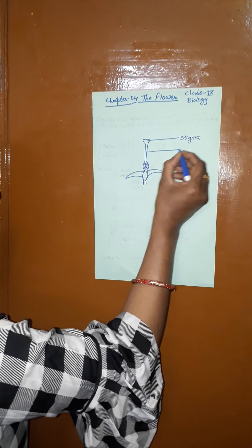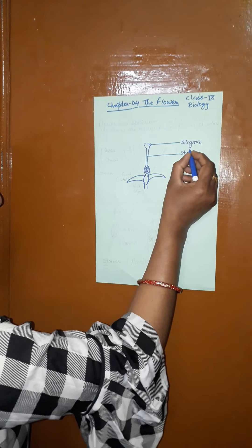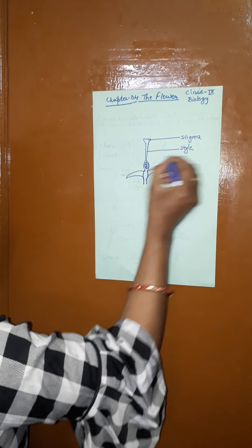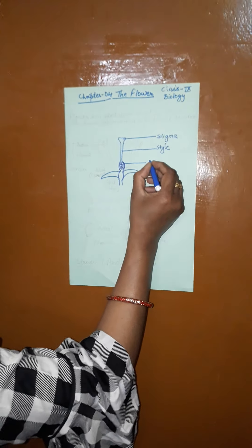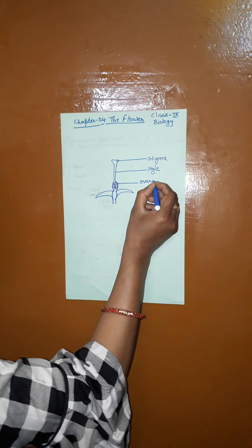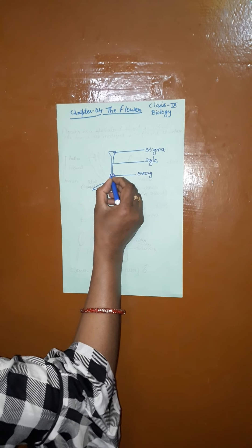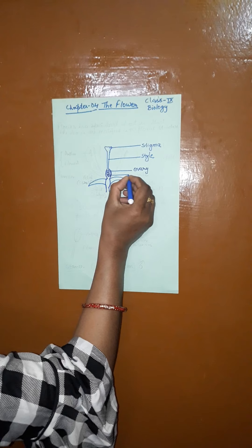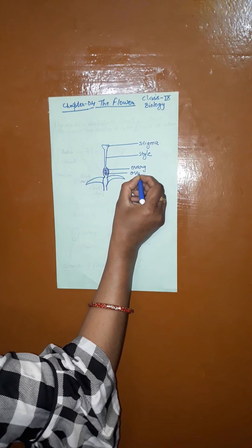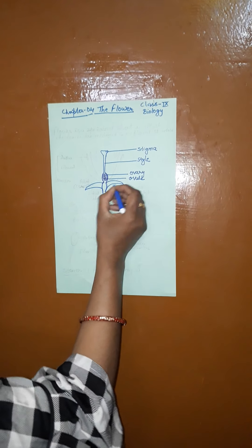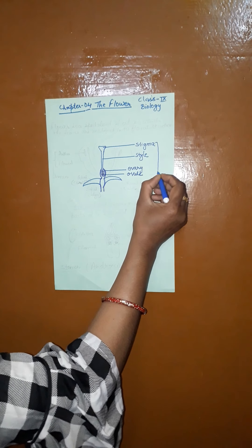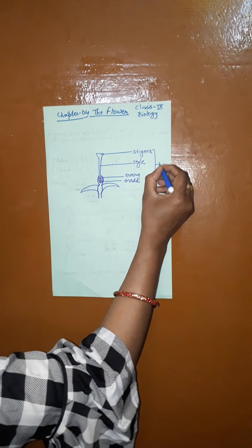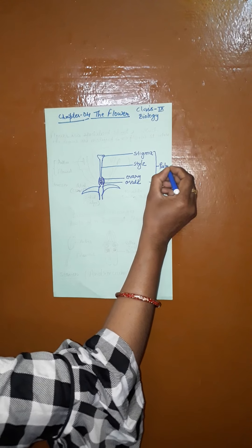This is the style. This is the solid area. This one is the ovary, and the round structures inside the ovary are ovules. Ovary becomes fruit and ovule becomes seed. Collectively, this is called pistil or gynoecium.